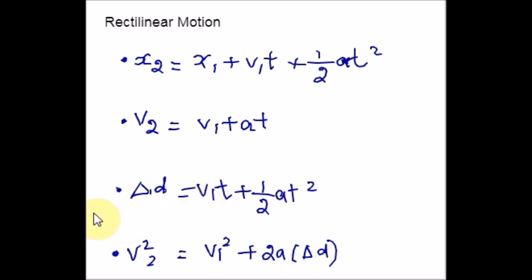Now, the third one, Δd = v1t + (1/2)at². This is an equation which will be helpful in finding the displacement of the moving object. Position, velocity, displacement. Does this make sense to you? This Δd, it means displacement.